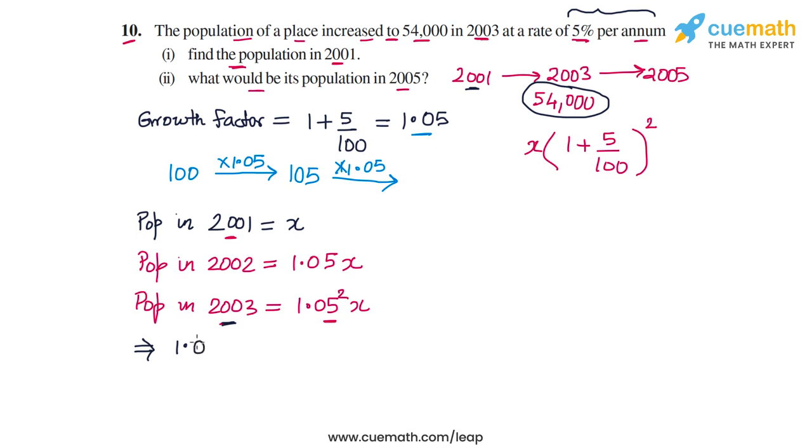So from here, we can equate the two expressions. So 1.05 square times x must be equal to 54,000. And from here, we can find our value of x. So x will be 54,000 by 1.05 square. 1.05 square is 1.1025. And if you carry out this division,